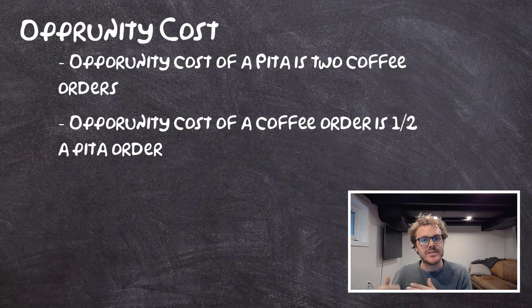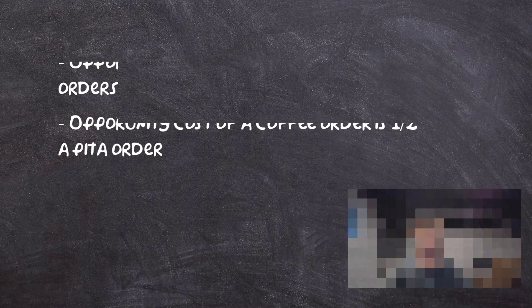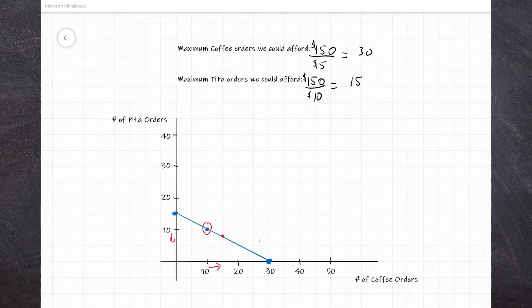In that last video we graphically represented all the possible combinations of PETAs and coffees through our budget line. We drew out this blue budget line showing all the possible combinations of coffees and PETAs that we could afford with our $150 budget. Now we can start thinking about our principle of opportunity cost with this exact same graph, and this is going to come through the slope of this blue budget line.